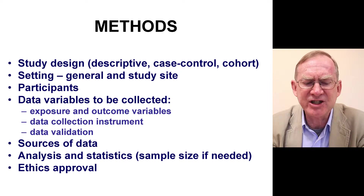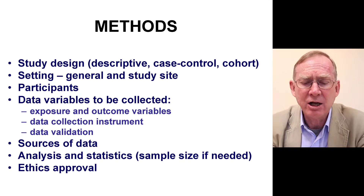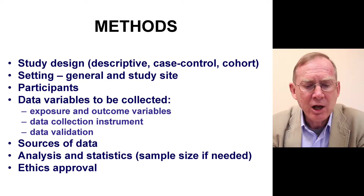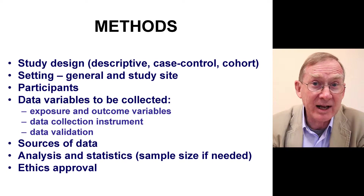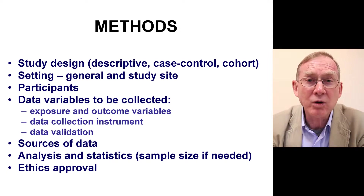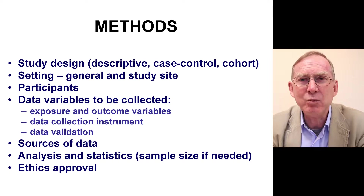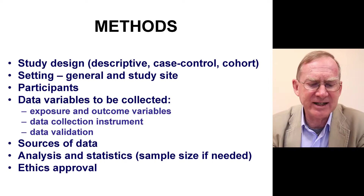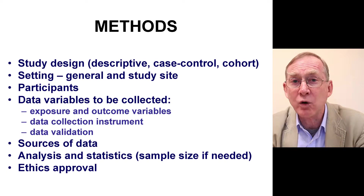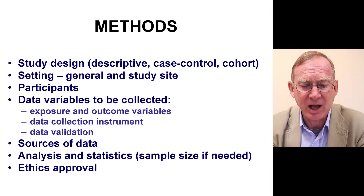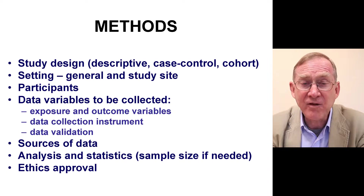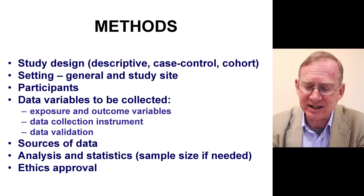Second, what is the setting — the general setting and the study site? Who are the participants? What are the data variables to be collected? Here we can think about exposure and outcome variables. What is our data collection instrument, and can we validate any of that data? What are our sources of data — registers, treatment cards, or electronic data files? Analysis and statistics: we need to spell out how we're going to do this. And finally, we need ethics approval.